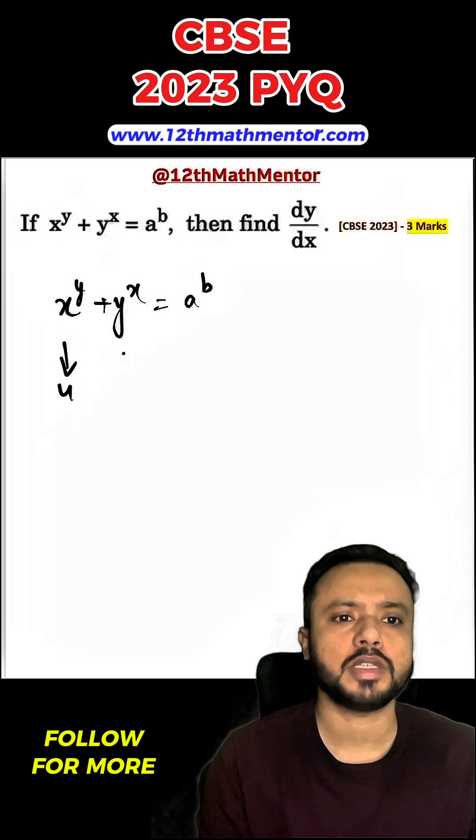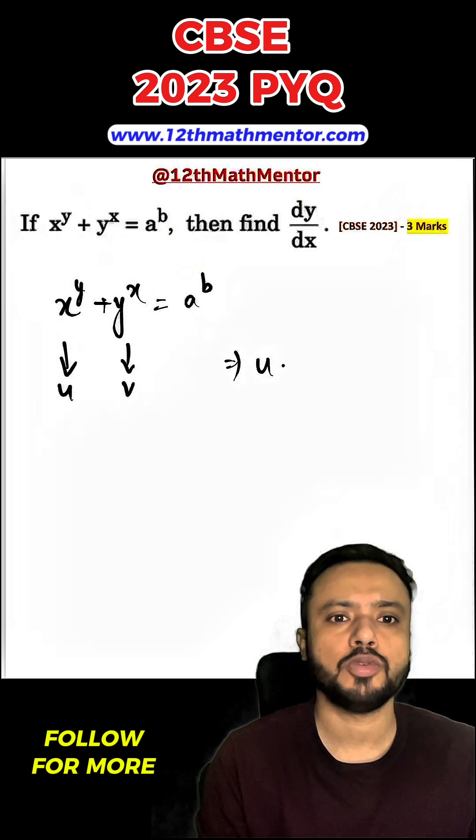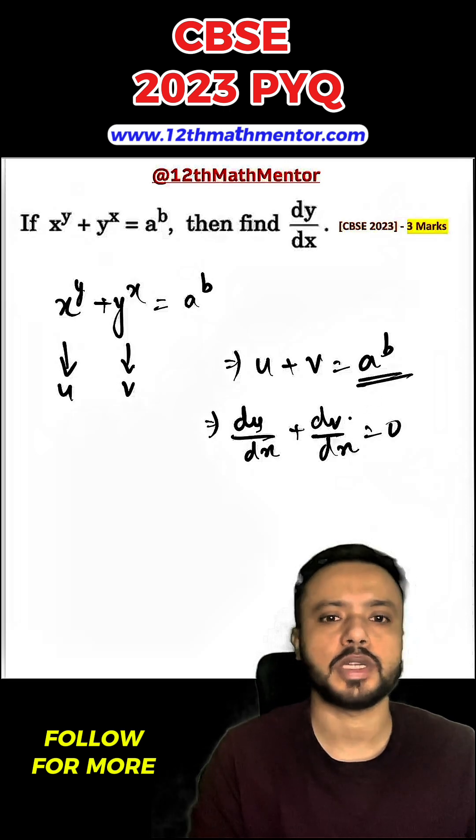To solve this, I am going to assume this function as u and this as v. So u plus v equals a raised to the power b. Now when I differentiate both sides with respect to x, I will get du upon dx plus dv upon dx equals 0 because a raised to the power b is a constant.